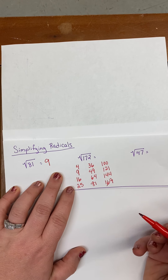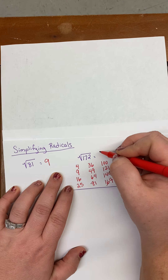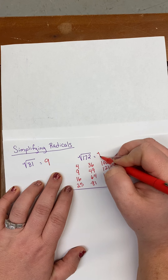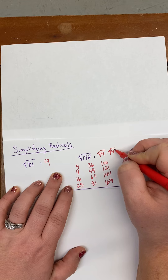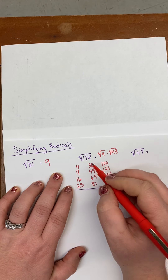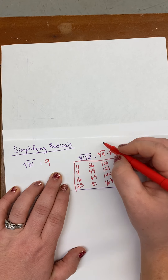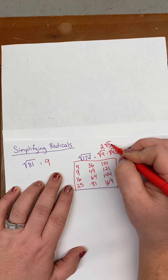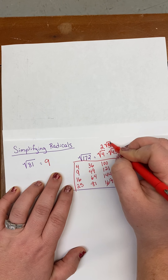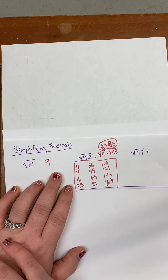I know that 172 equals the square root of 4 times the square root of 43. The square root of 4 is 2, and 43 can't be broken down. So the square root of 172 is equal to 2 square root of 43.